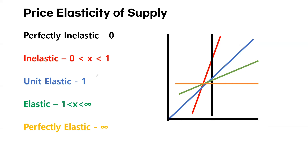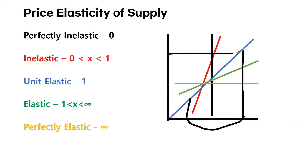The third type is unit elastic, and it is the same as unit elastic of demand — a certain percentage change in quantity corresponds to the same percentage change in price.